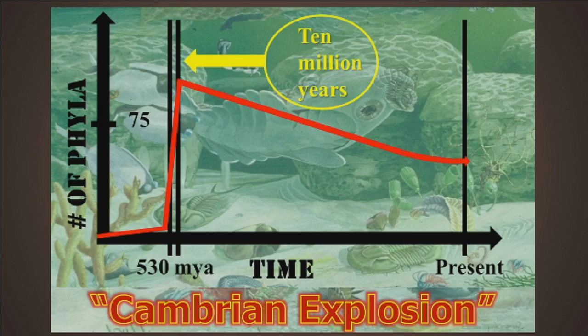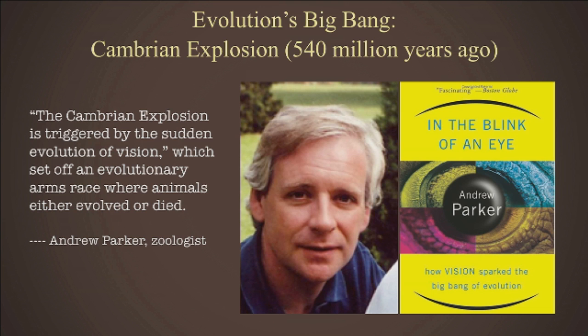A few years ago, a young Australian zoologist called Andrew Parker put forward one of the most authoritative accounts for what happened. In a nutshell, eyes happened. Animals developed eyes. In his own words, the Cambrian explosion was triggered by the sudden evolution of vision, which set off an evolutionary arms race where animals either evolved or died. With the onset of eyes, animals had to learn to become proactive — they became predators to seek out food, and some became prey to hide from predators. Because of that, the variations in the animal kingdom just exploded.